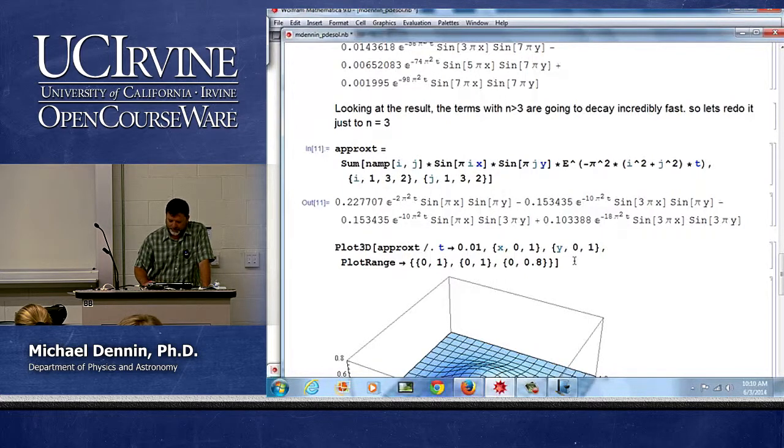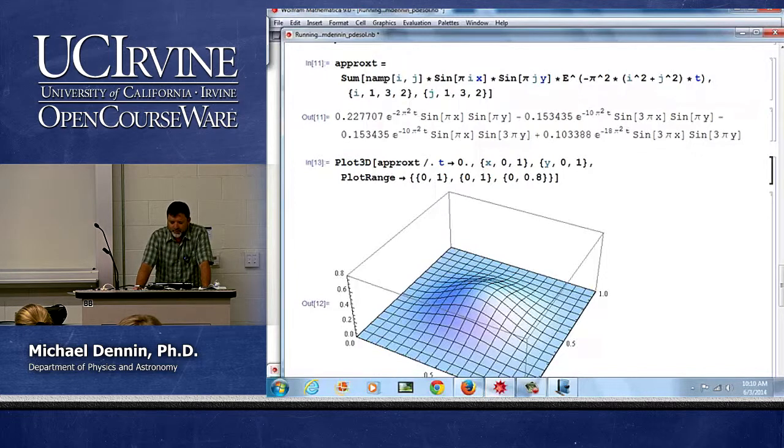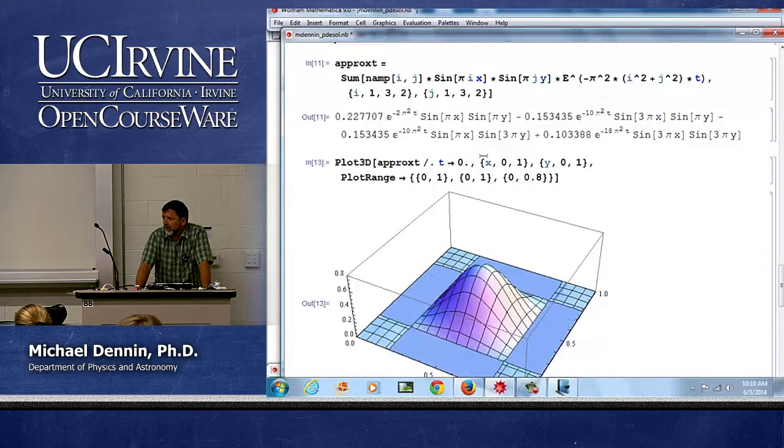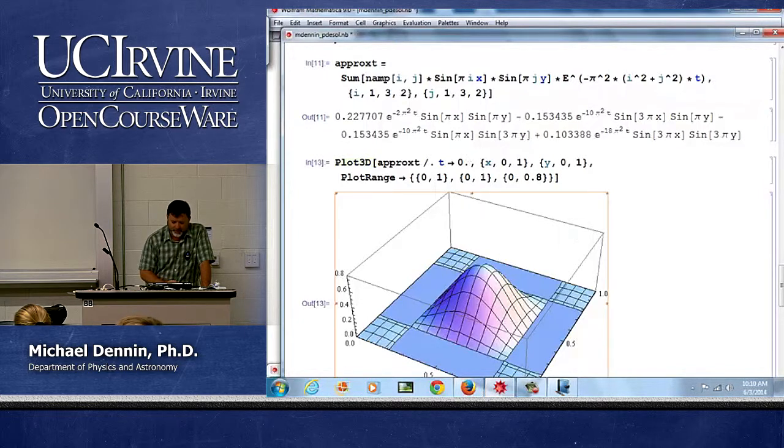And now I can make a 3D plot. And one thing to notice, let's just actually use 0. So at t equals 0, I'm starting with a pretty big peak. I don't quite have all the way up to 1 because I'm missing some of the terms and if t equals 0 they do actually matter.